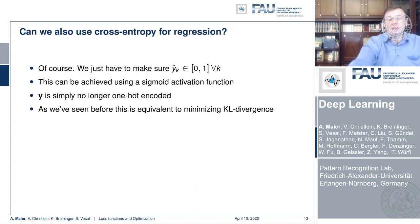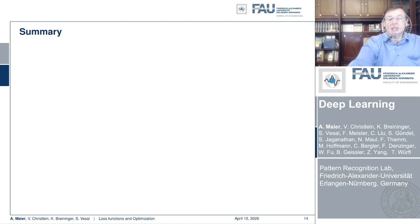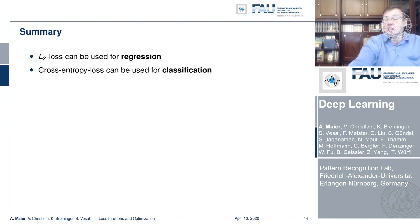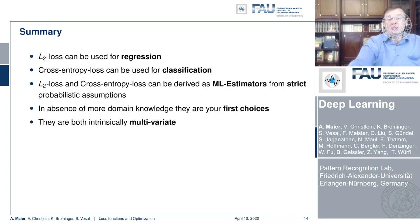Let's summarize what we've seen so far. L2 loss is typically used for regression. Cross-entropy loss is typically used for classification, typically in combination with one-hot encoding. Of course, you can derive them from ML estimators from strict probabilistic assumptions.